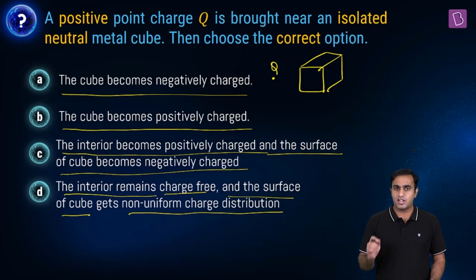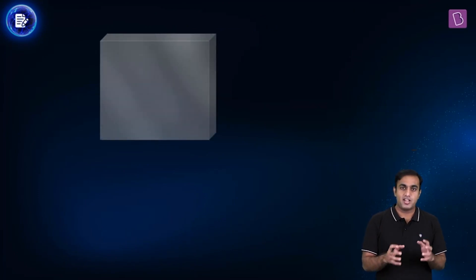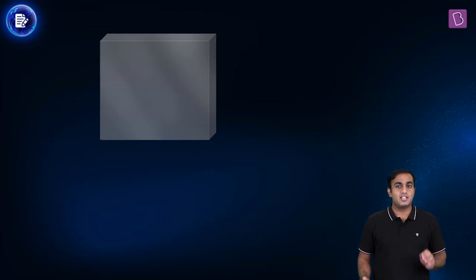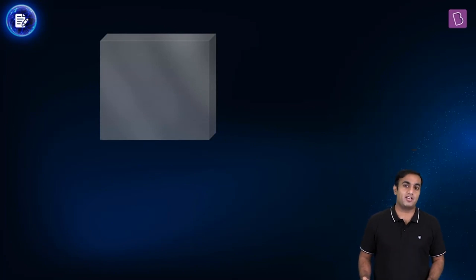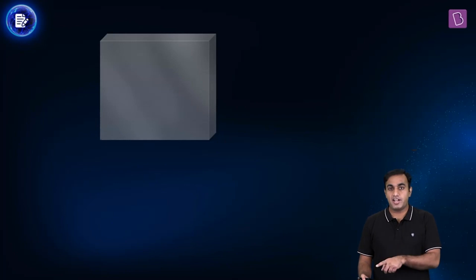In order to choose the right option, we have to remember a few points. First, initially this conducting cube is neutral. There is no contact of this cube with any charged particle, no charge transferred to it by rubbing, friction, or contact. So the net charge in the beginning and the net charge at the end should be the same, which is zero.